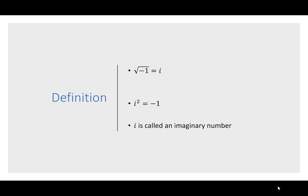We need to start with a definition. By definition, the square root of negative 1 is going to be called i. Because i is the square root of negative 1, when I square it, I get negative 1. This looks like the square root of negative 1 times the square root of negative 1 equals negative 1. We'll talk about operations with i as we go, but for now, the square root of negative 1 is i, and i squared is negative 1. This letter i is called an imaginary number.